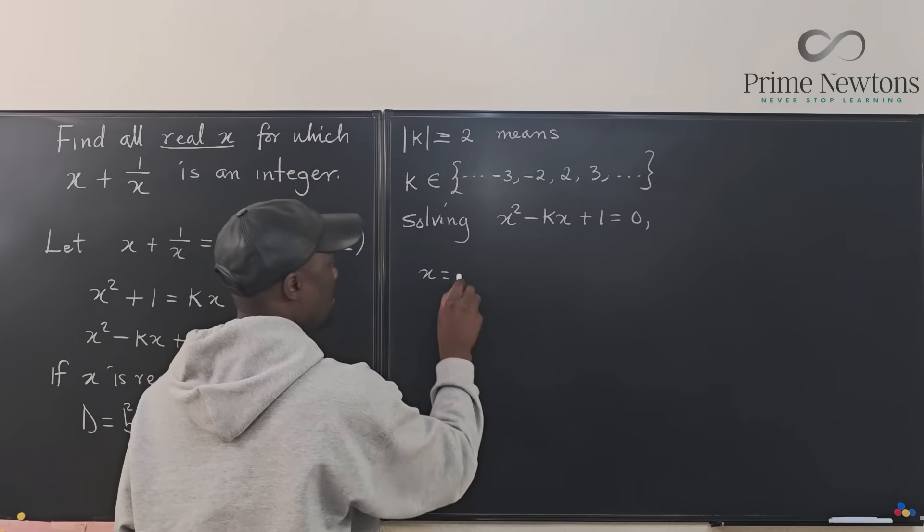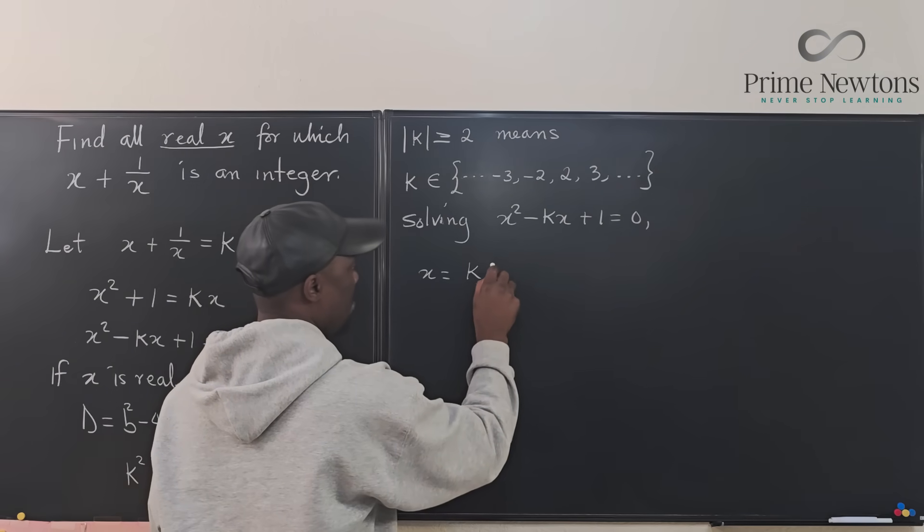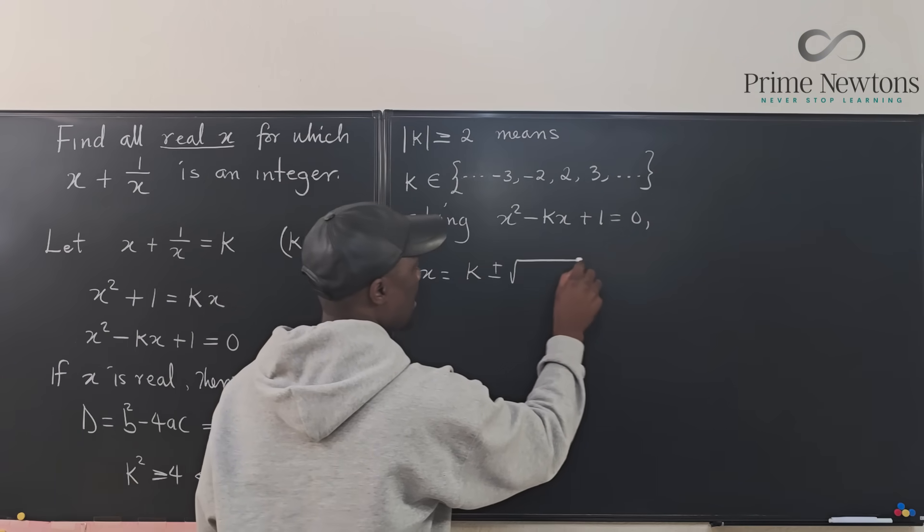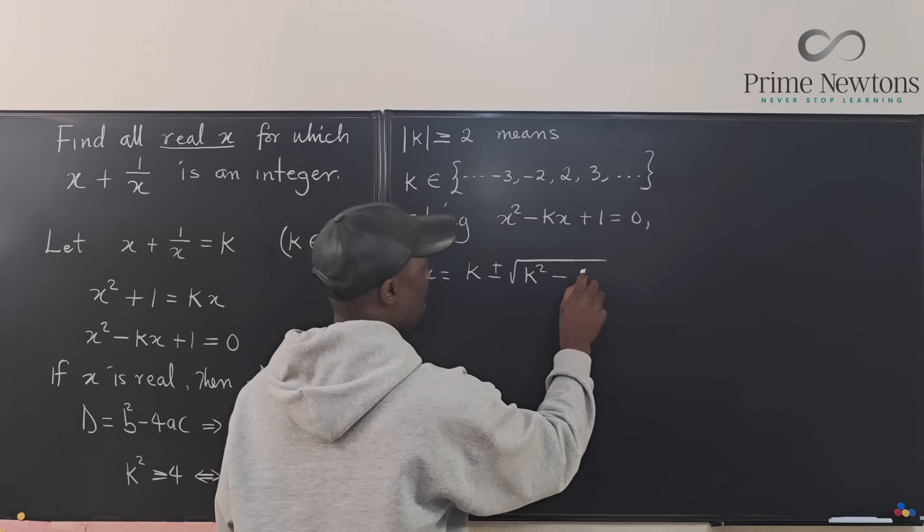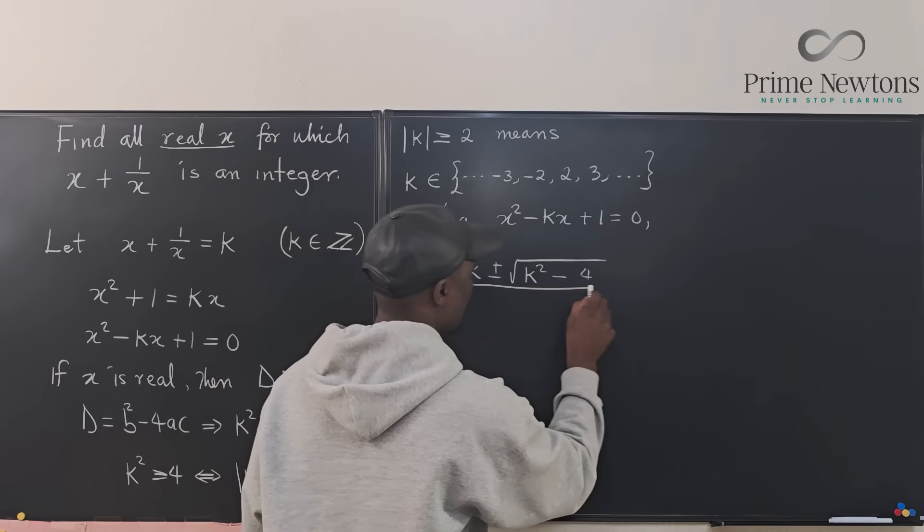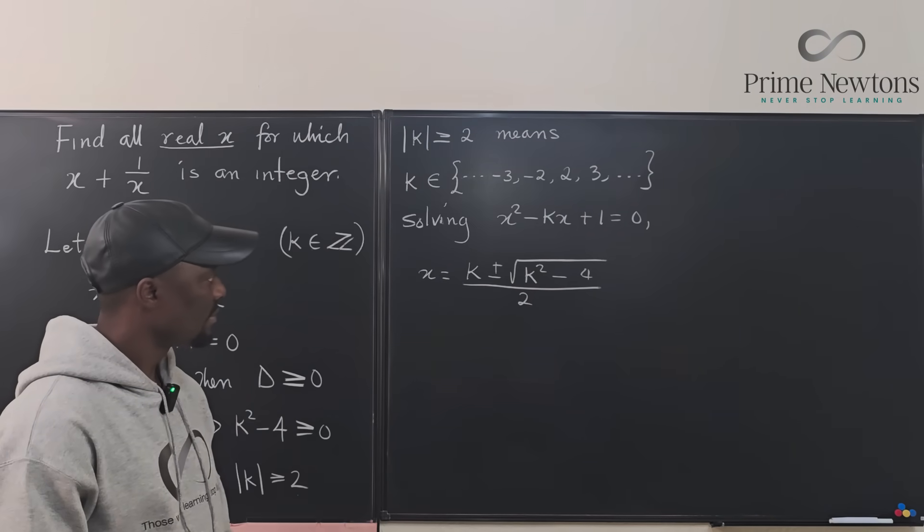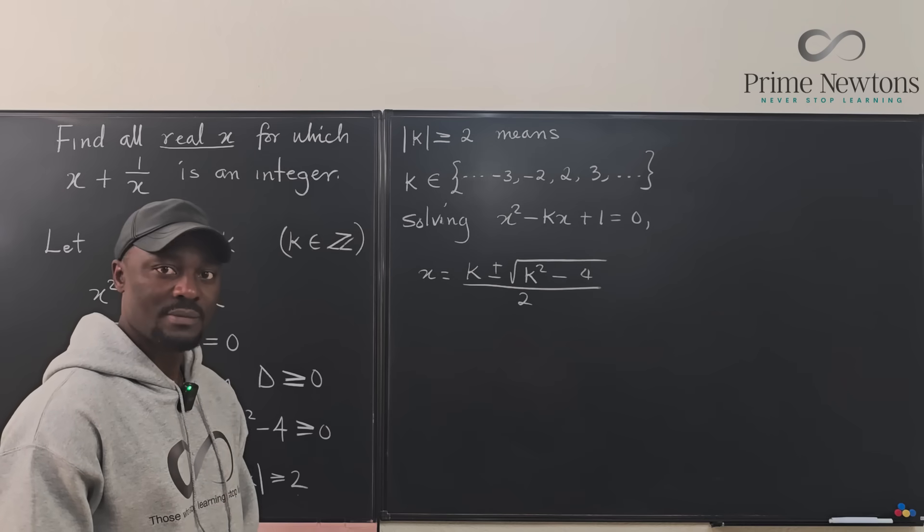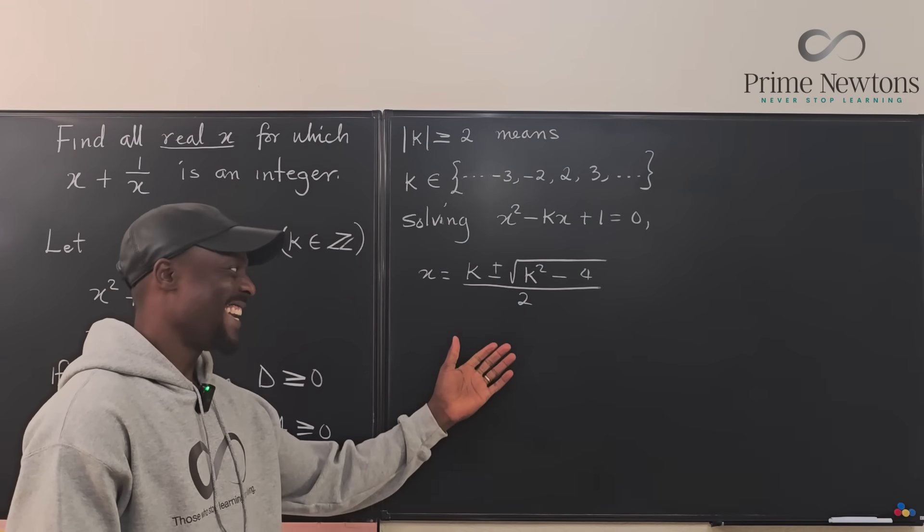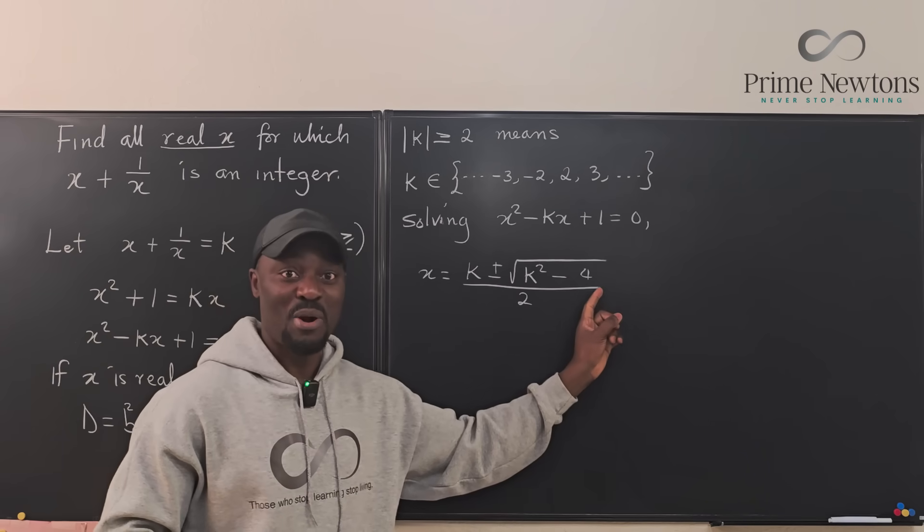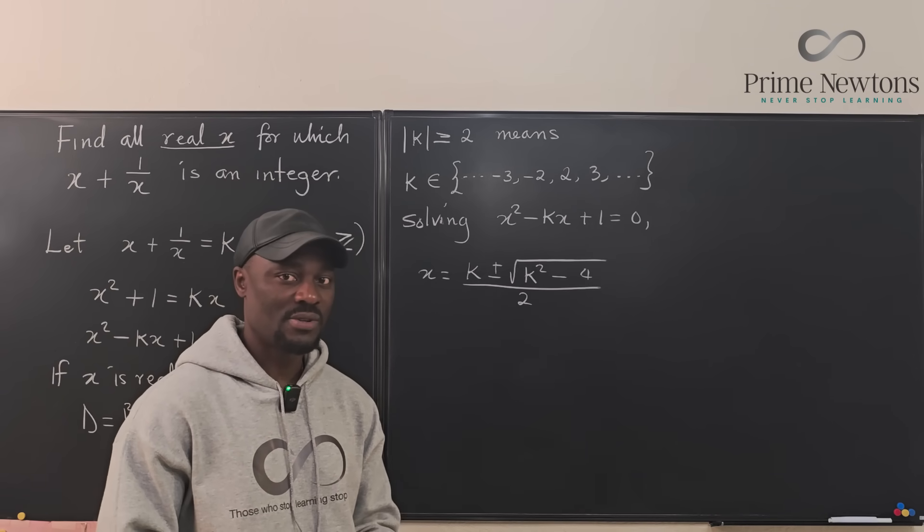We have x equals, using the quadratic formula, is going to be minus b, which is k, plus or minus the square root of b squared minus 4ac, which is going to be k squared minus 4, over 2a, which is over 2. And that's the answer. If x has this property, then x plus 1 over x is an integer.